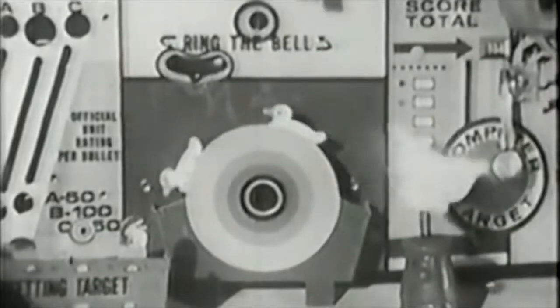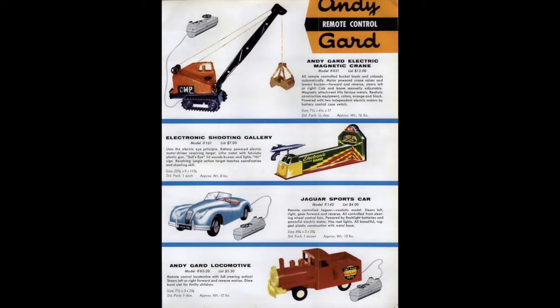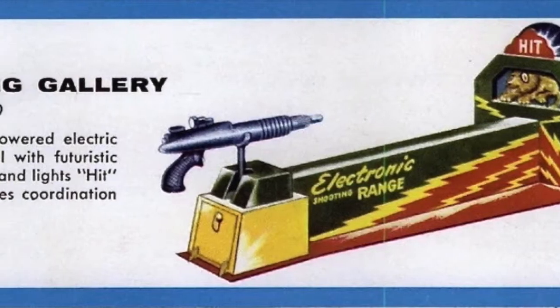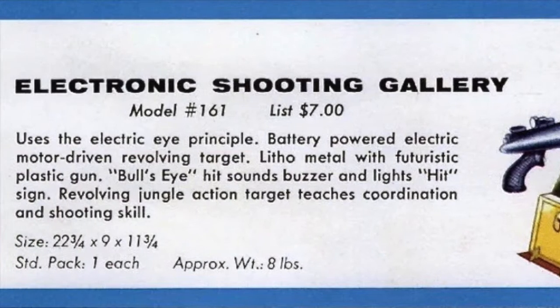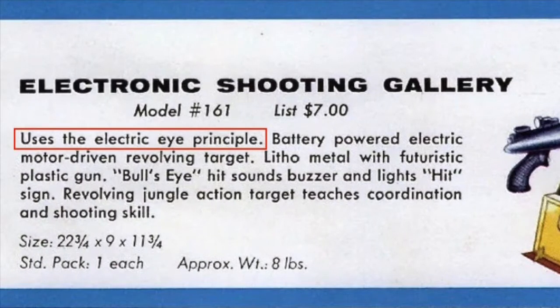When I brought it back to Mr. Brown's basement, I started doing research to find out what I could. It wasn't long before I hit the jackpot and found an ad for this very toy. I was intrigued. What exactly did I have? It says it uses the electric eye principle. Wow! In the 1950s? How could they do that? How could I do that?